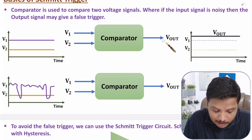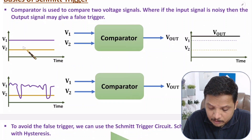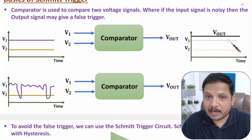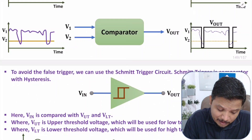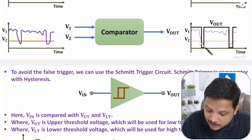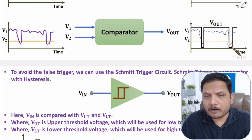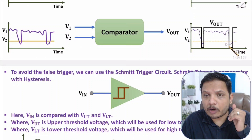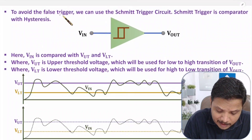Let me explain how false triggering can occur by a comparator. Consider a case study where the comparator is comparing V1 and V2. If V1 is greater than V2, the output will be high; if V1 is less than V2, output will be low. In the first situation, V1 and V2 are both constant DC with no noise, so the output is active high only. But if I add noise with V1, in the second scenario there can be false triggering — V1 goes below V2 because of noise, causing negative spikes at the output. To avoid such false triggering, we use the Schmitt trigger circuit.